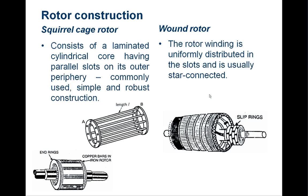For the rotor, there are two ways. The first is the wound rotor, where you get a winding on the rotor. There are three slip rings and three windings equally spaced — just like the stator — wound around the rotor.